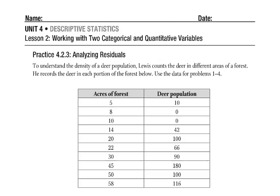To understand the density of deer population, Lewis counts the deer in different areas of a forest. He records the deer in each portion of the forest below.